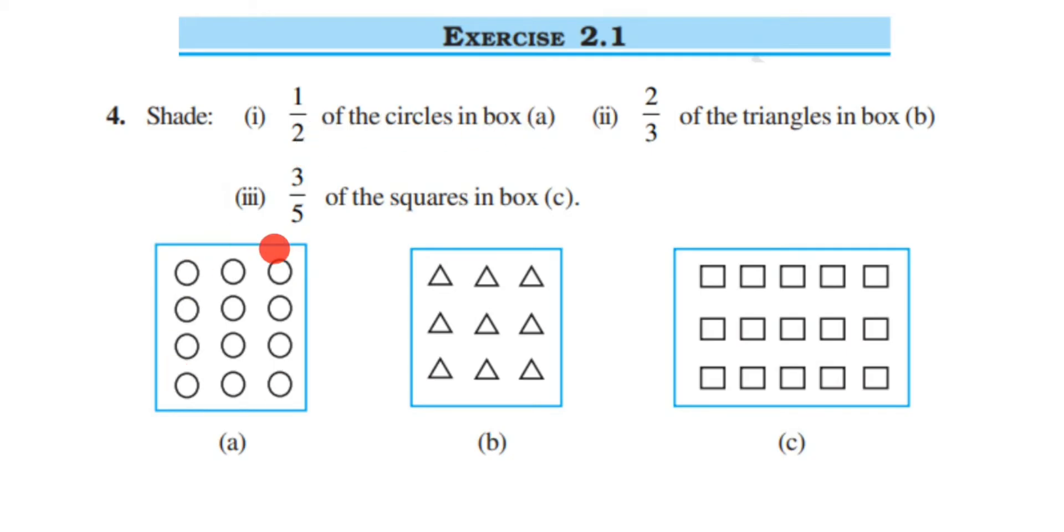We have circles. We have to circle half of them, so let's count how many circles we have. We have three circles in each row, and like that we have four rows, right? So three fours are 12. Total 12 circles we have in this box.